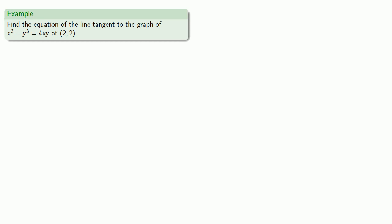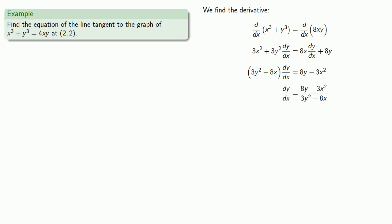And Fermat said, No problem! Well, actually he was French, so he probably said something like, C'est très facile! And we can do the same thing without too much more difficulty. So let's find the derivative. Because this function is defined implicitly, we'll use implicit differentiation. After all the dust settles, we have this formula for the derivative.